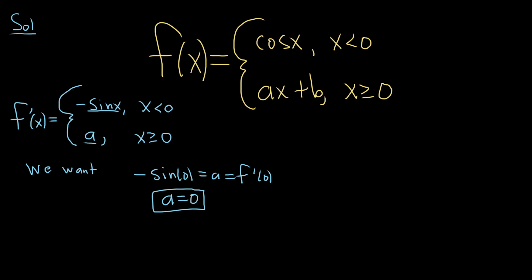For the function to be continuous everywhere, each piece by itself is continuous. The only possible issue where continuity might fail is at 0. So let's force continuity at 0.